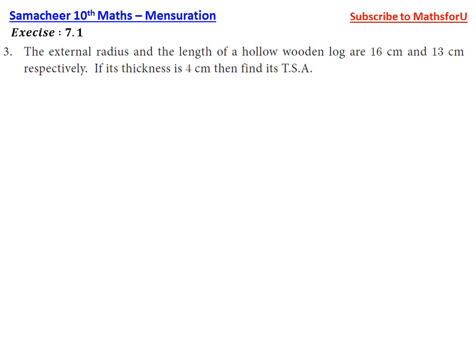So now the external radius of the hollow cylinder, height, then thickness. We can do the total surface area, TSA. This is a hollow wooden log, so this is the thickness and height. Here is the external radius, we can do the external radius that is 16 cm, then height length of the log 13 cm, then thickness 4 cm.